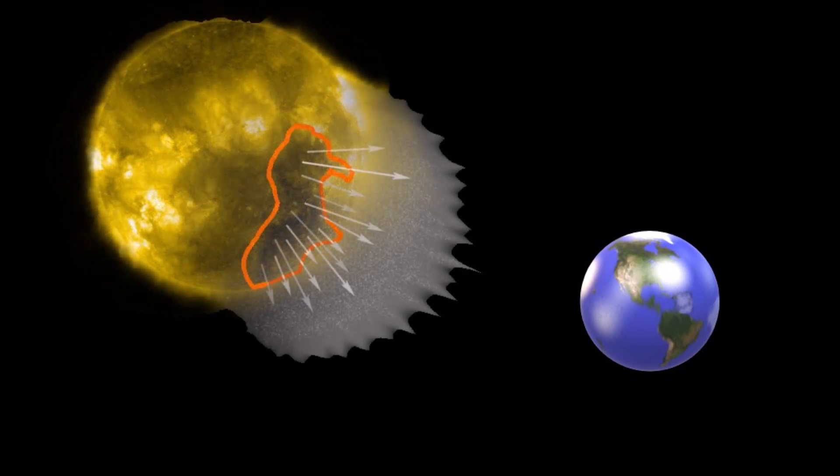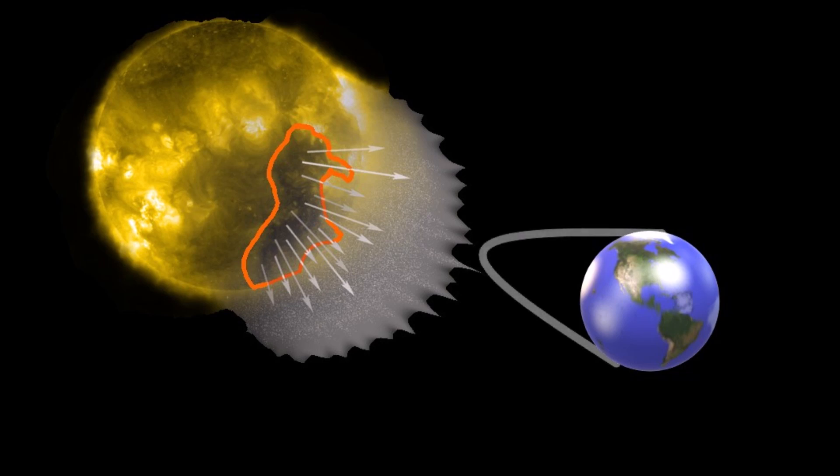Coronal holes are breaches in the sun's magnetic field which allow massive plumes of plasma to burst out from the sun's upper atmosphere. If the earth aligns with the burst of energy, it has the potential to initiate dangerous geomagnetic storms.